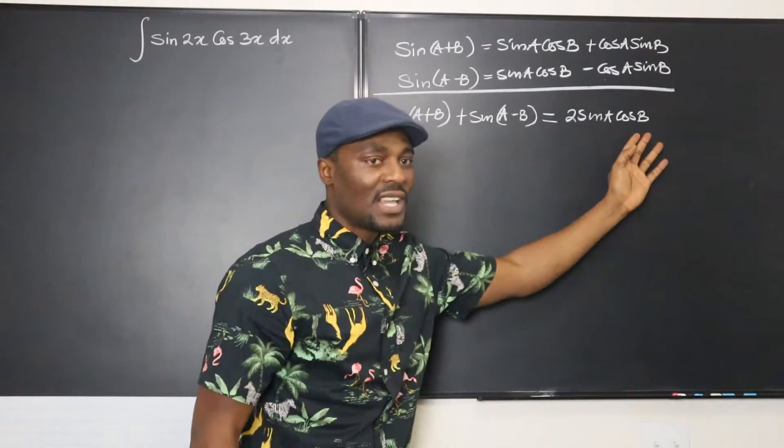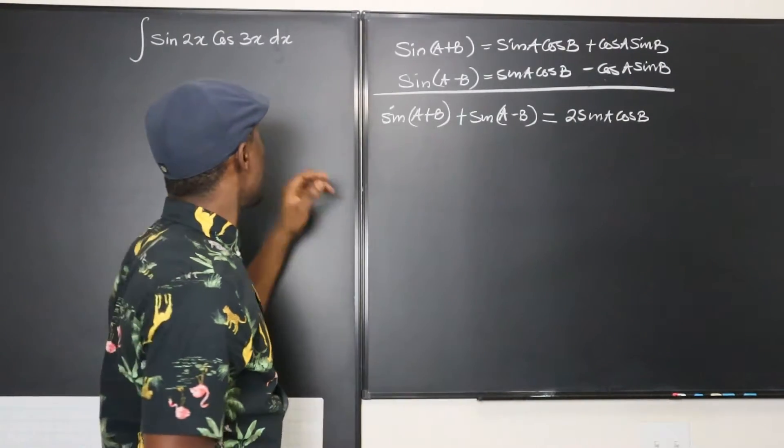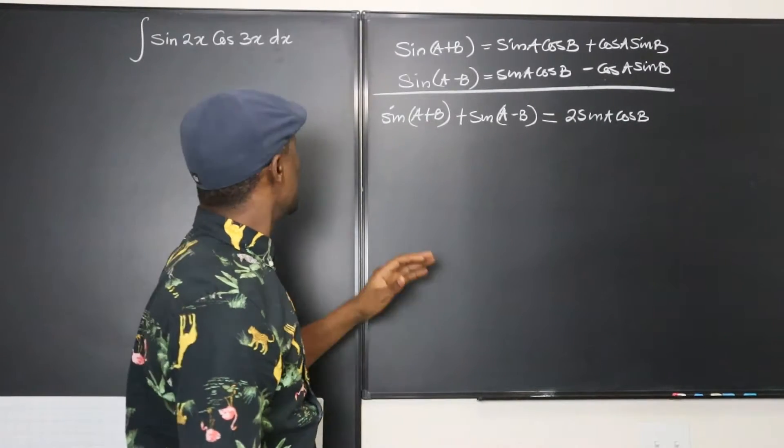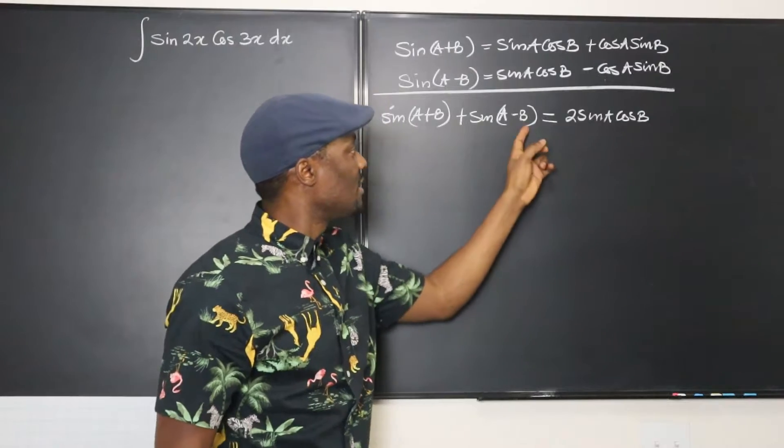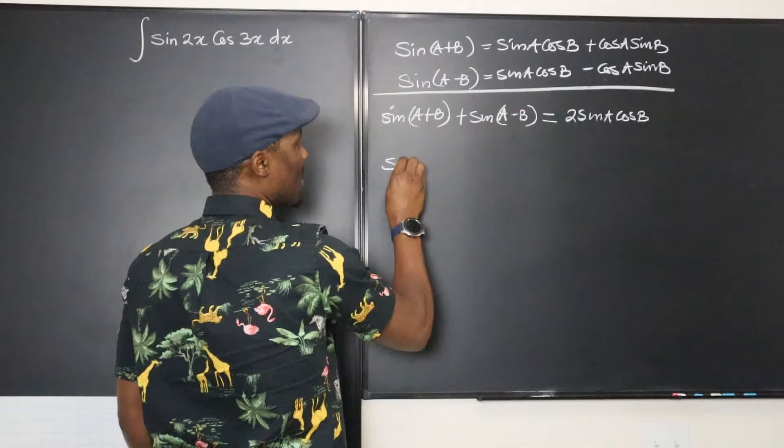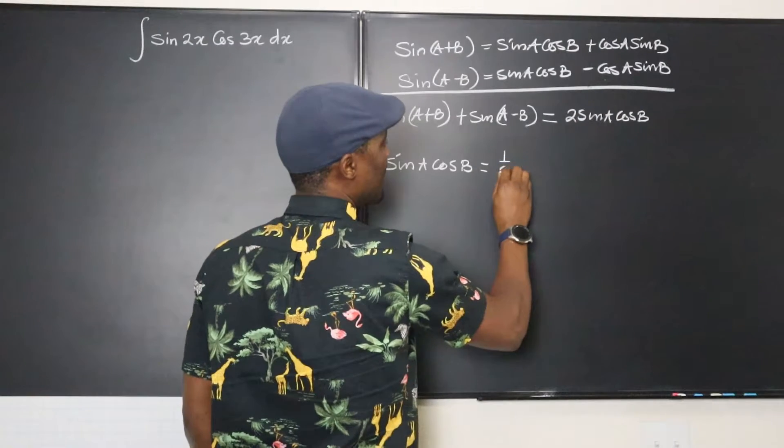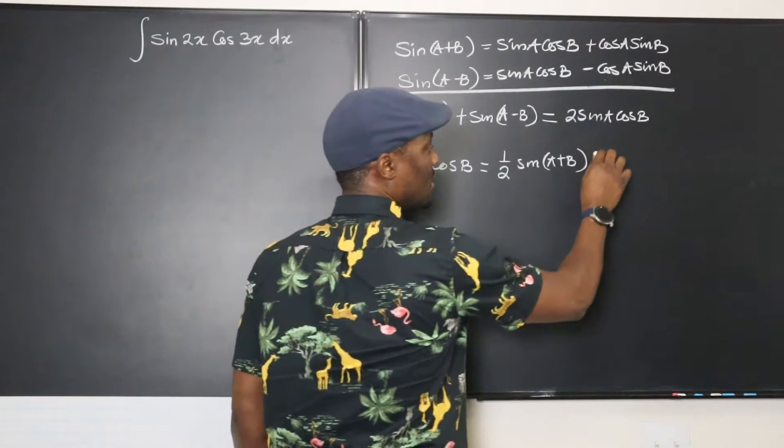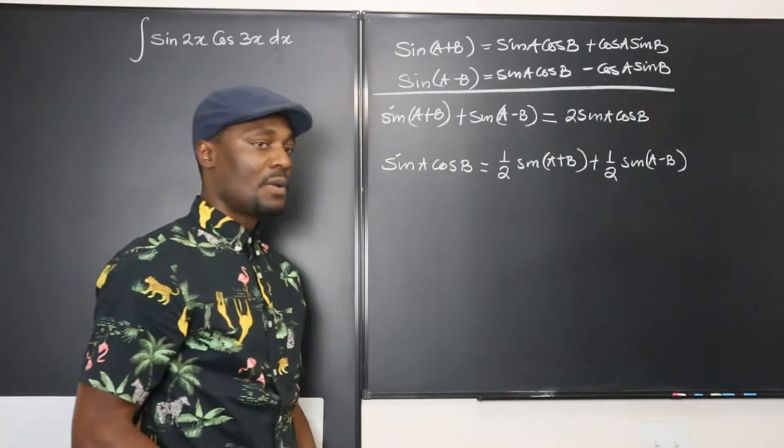So now we have an expression on this right hand side that looks a little like this. You can now start to assume that your a is 2x and your b is 3x. But just to make it look exactly like this, let's get rid of these twos. This two is going to divide this, divide this, divide this. You'll end up with an expression that says sine a cosine b will be equal to one half of sine(a + b) plus one half of sine(a - b).